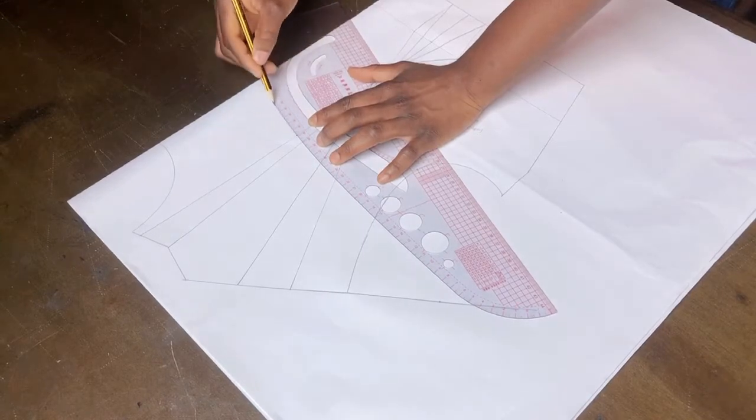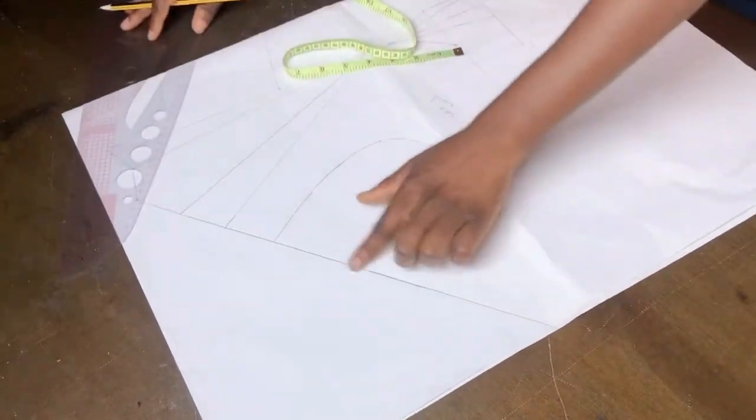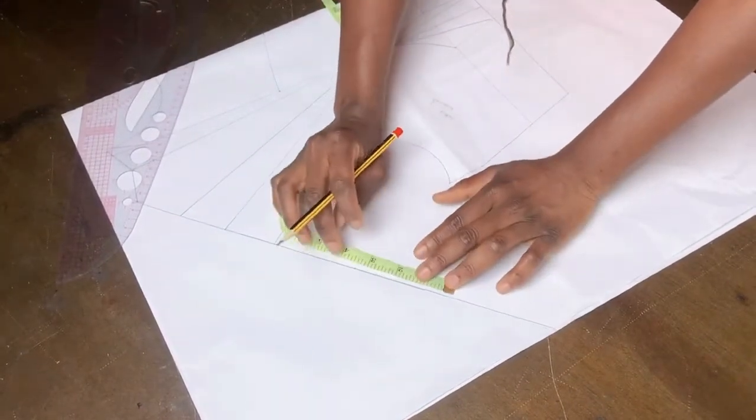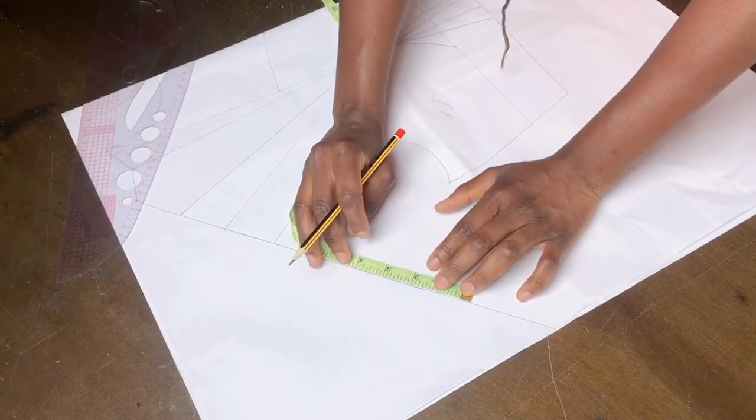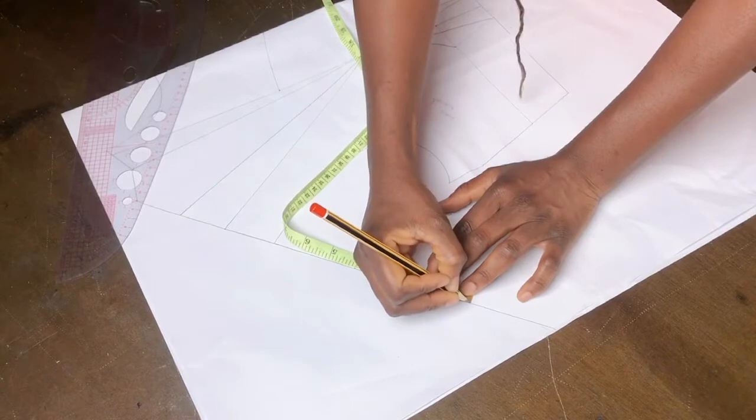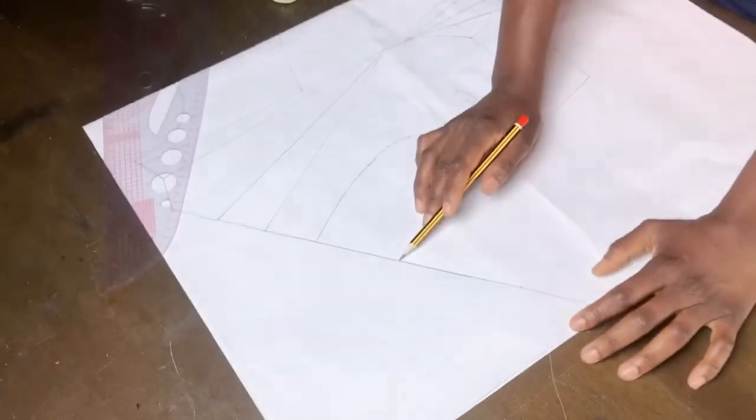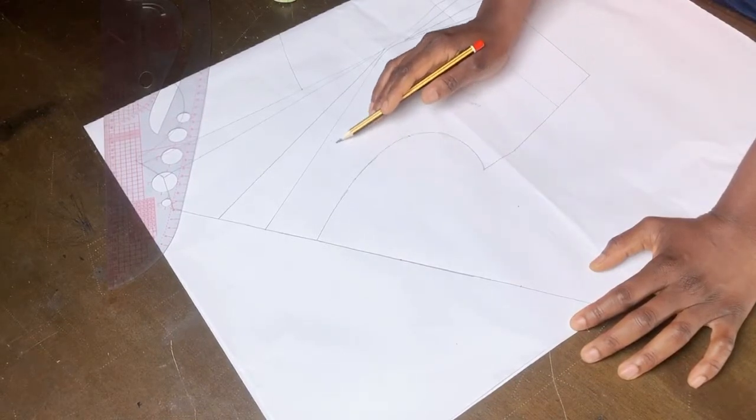Mark the width you want for your cape. So here I want mine to be a bit wide, so I'm marking three to four inches. So you're marking this four inches, or whatever you want for your width, from the three inches that you marked earlier. Next, just connect as shown on the screen and this way you have shaped the upper part of the cape.